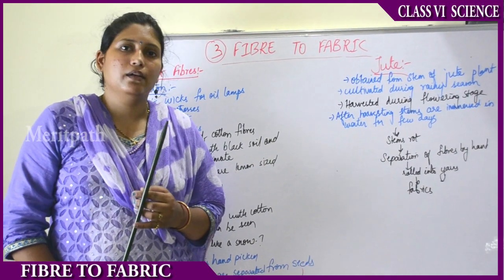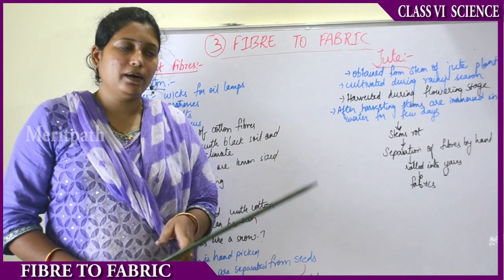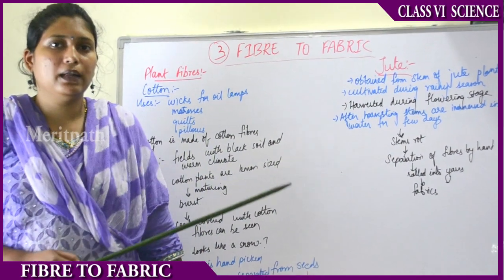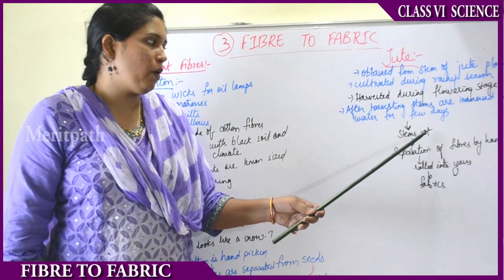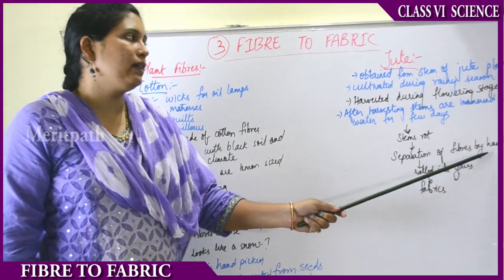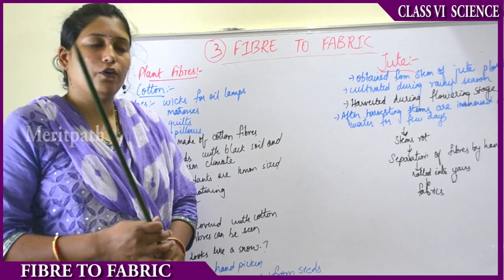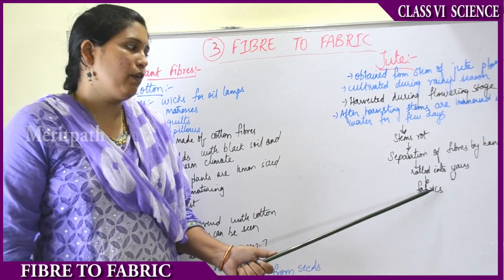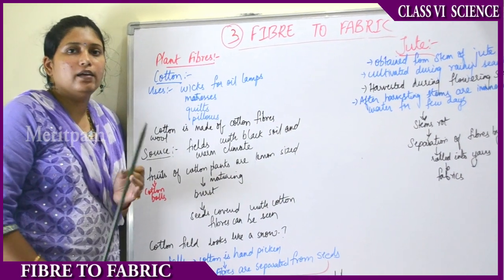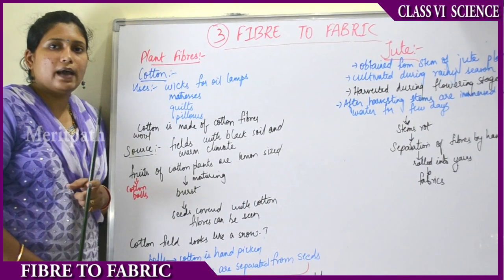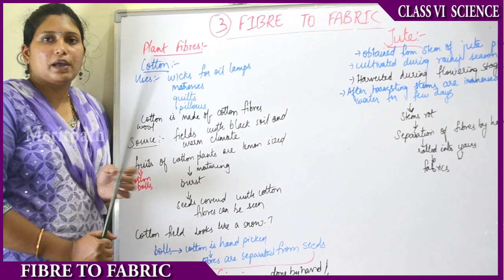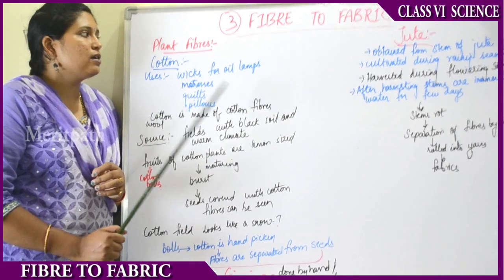Due to continuous dipping in water, the stems rot — just like how bread kept out for a long time develops greenish colored growth. After the stems rot, the fibers are separated by hand, then rolled into yarns, and fabric is woven from them. Jute fibers are environmentally friendly. Nowadays we see many jute bags in the market. Mahatma Gandhi, the father of the nation, also encouraged the use of plant-sourced fibers.